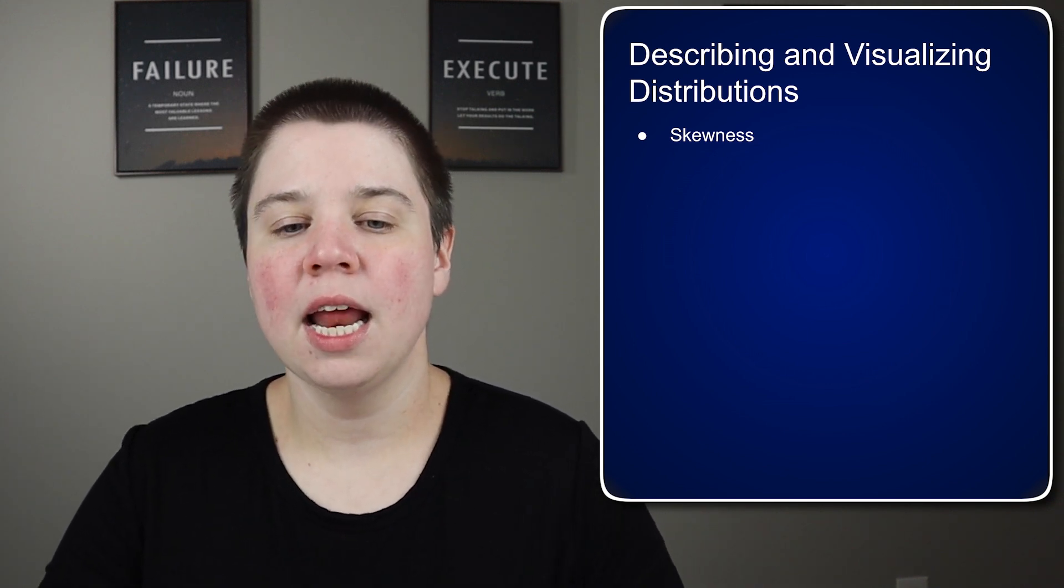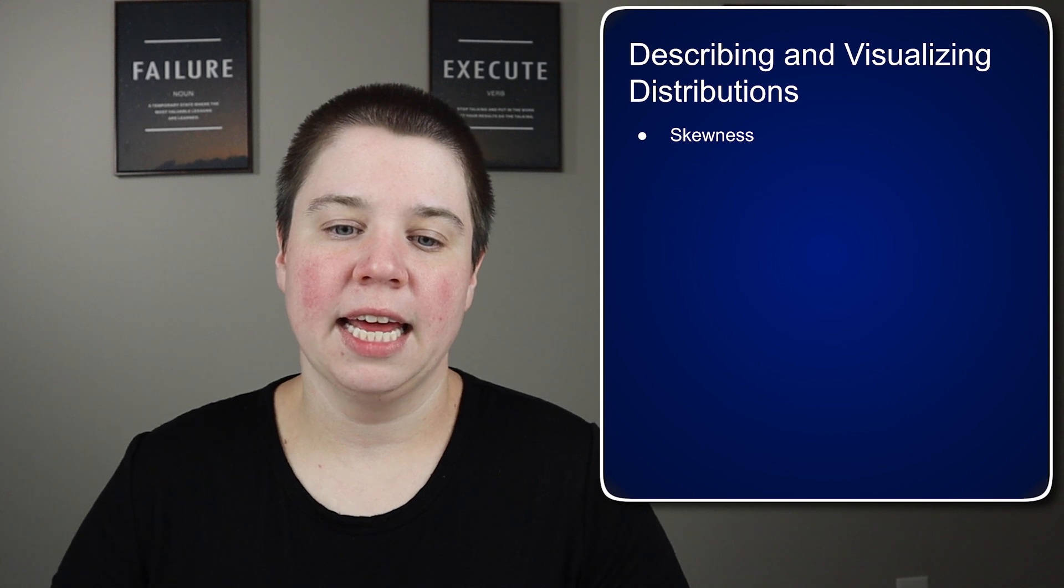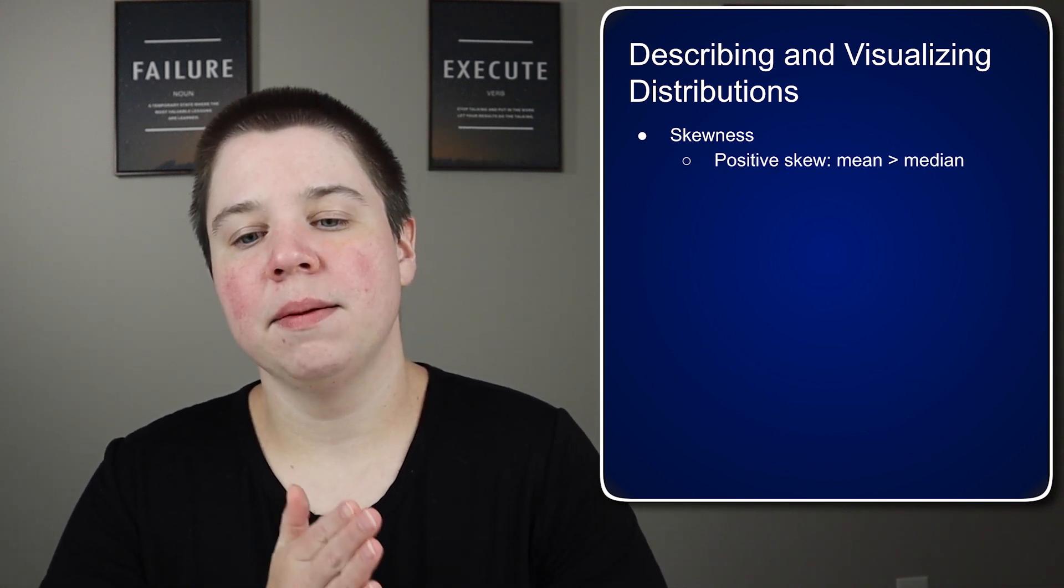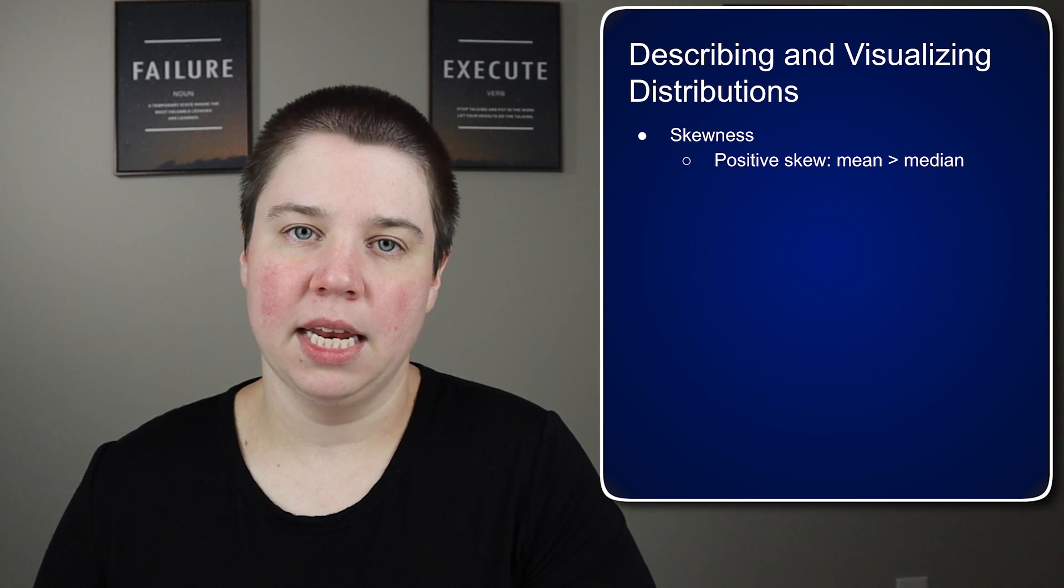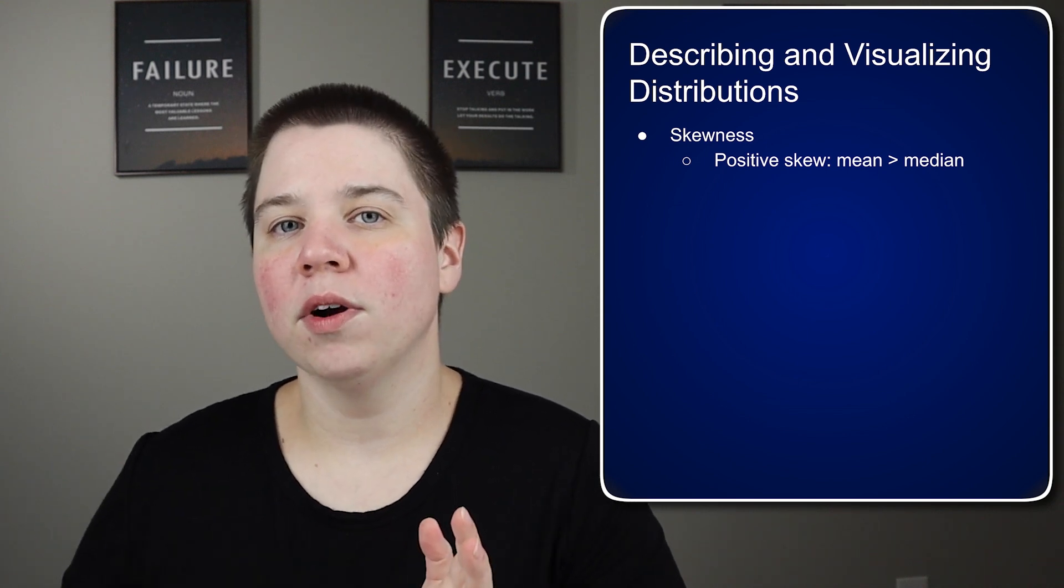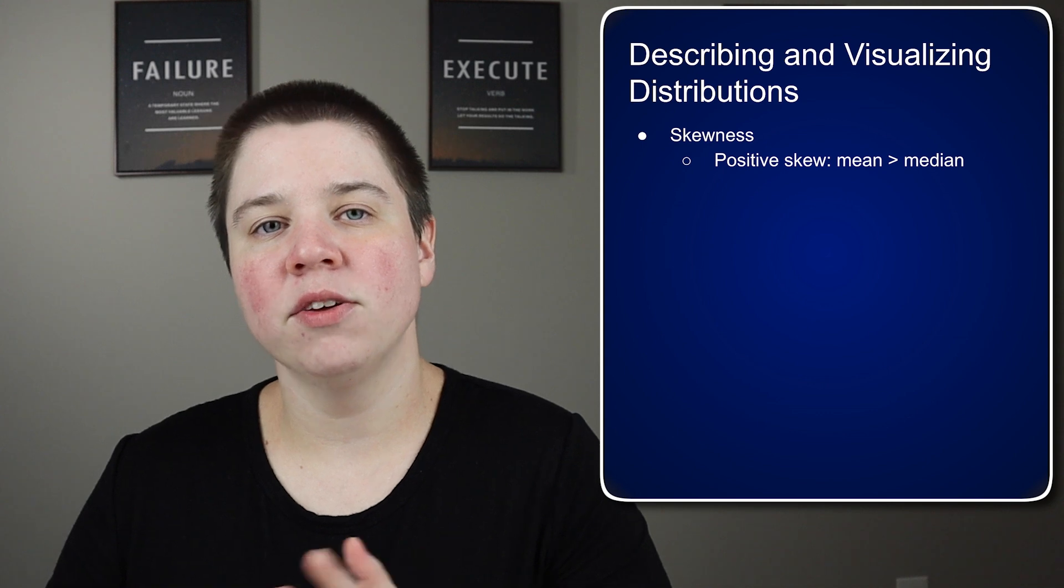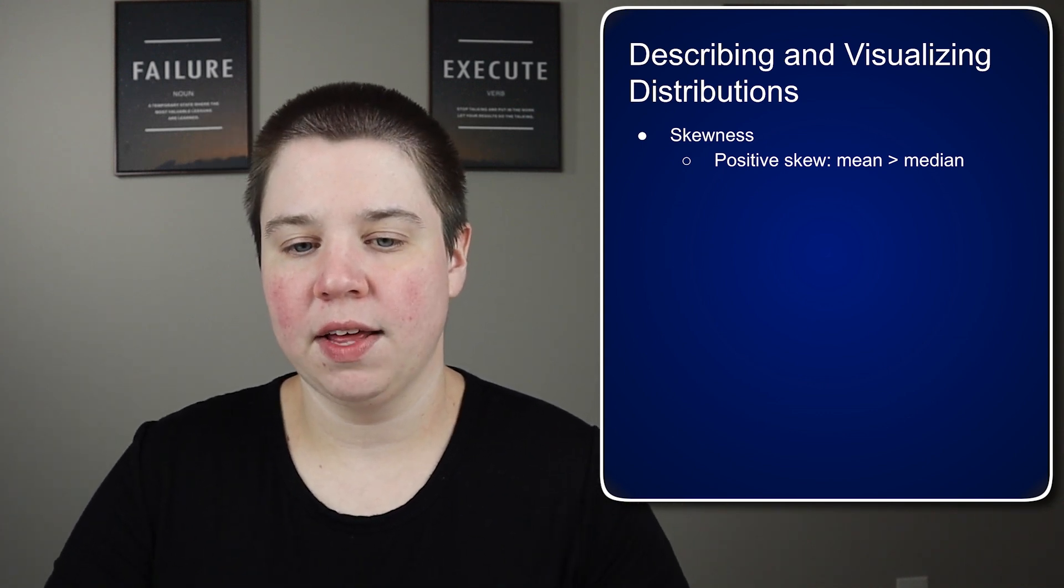We talked about a skewed distribution, but even a normal distribution can have skewness. A positive skew means that the mean is higher than the median. So essentially there are more values with higher frequency on the upper end of values than there are on the lower end of values.